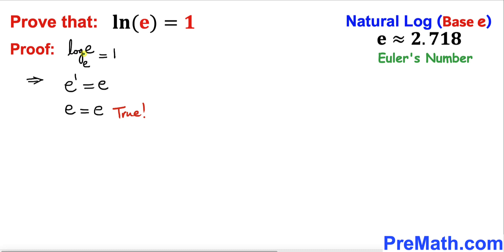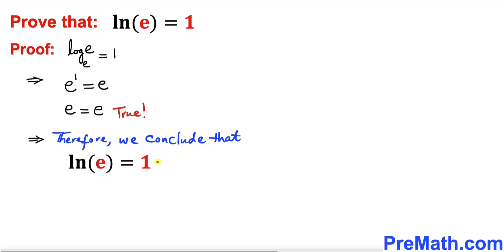So therefore we conclude that log of e with the base e is indeed equal to 1, and therefore we conclude that natural log of e equals 1, and that's our proof.